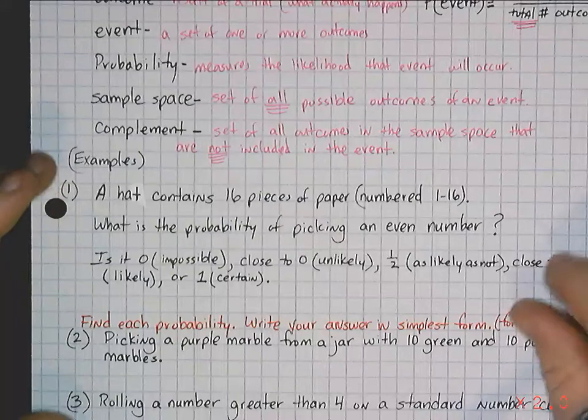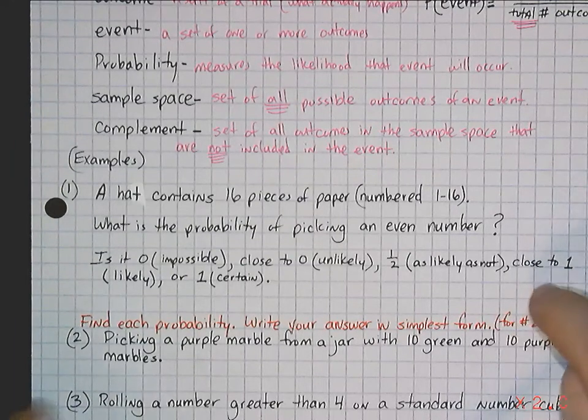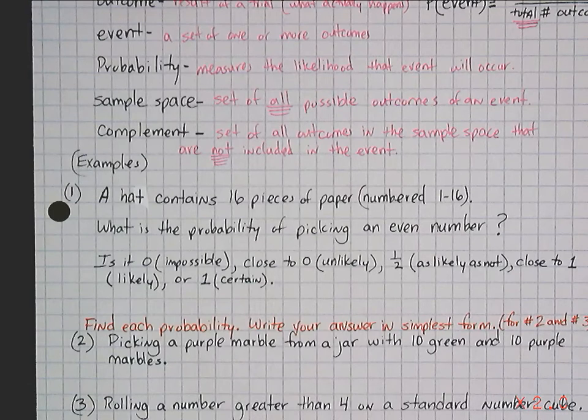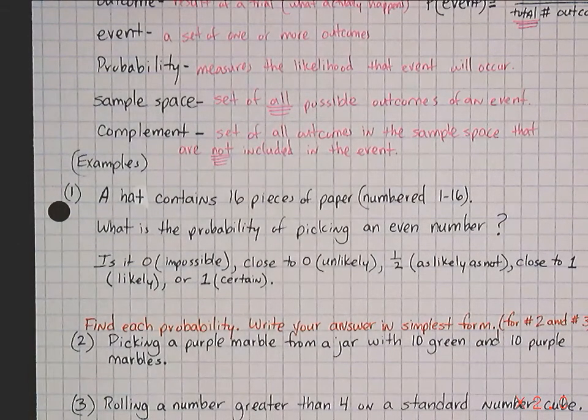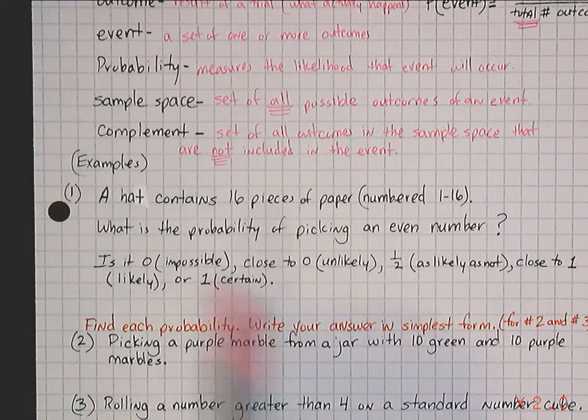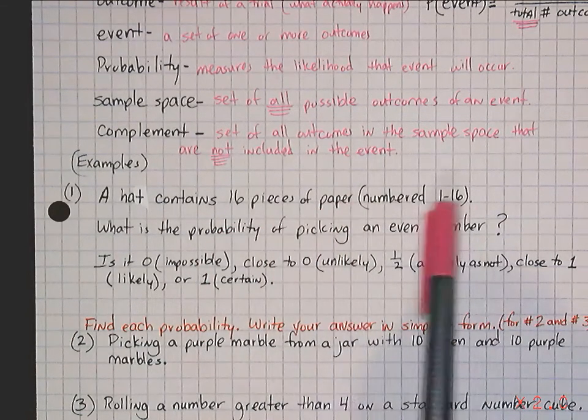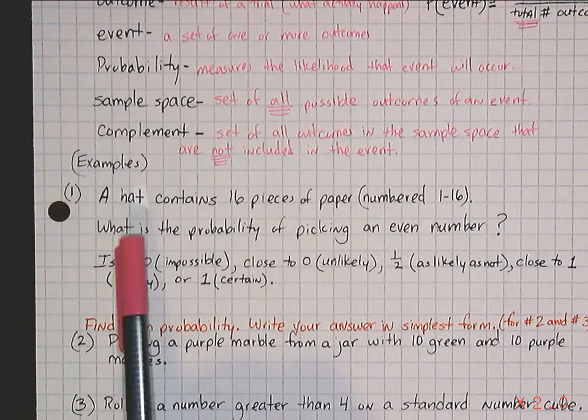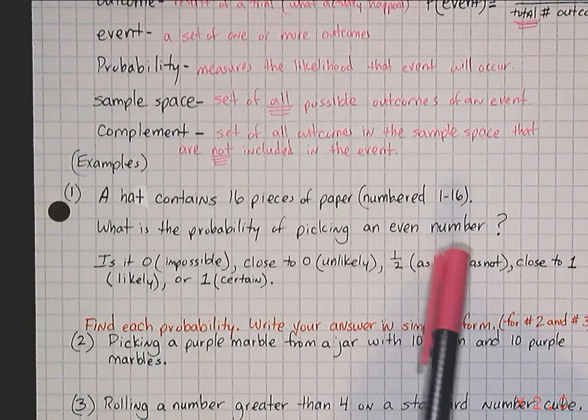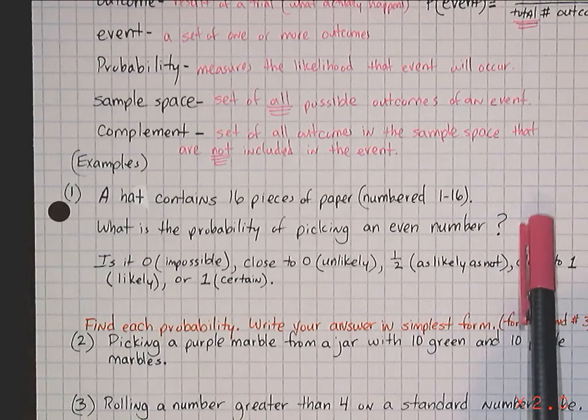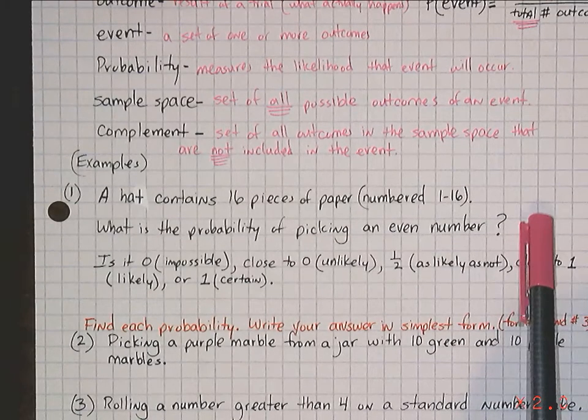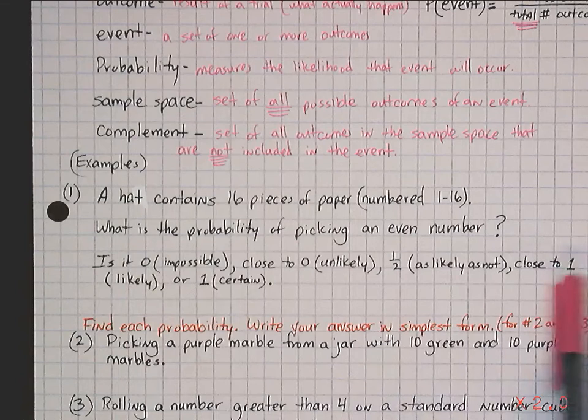So, let's talk about number one. And these are examples found in your book. I didn't refer to them, just, you know, I usually normally change it, but just in case, if you want to look in your lesson, you can find them. So, basically, let's just go through this. Number one, so if I have a hat that contains 16 pieces of paper, each one's numbered 1 through 16, what's the probability of picking an even number? And then you have to use these also. So, there's going to be two answers. I'm going to ask, what's the probability of picking an even number, and is it one of these? You know, which one would you pick?